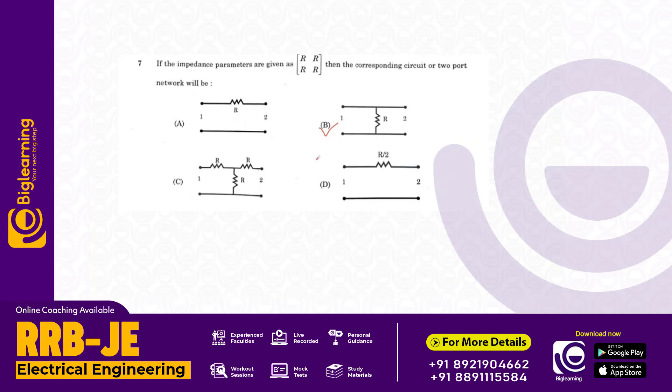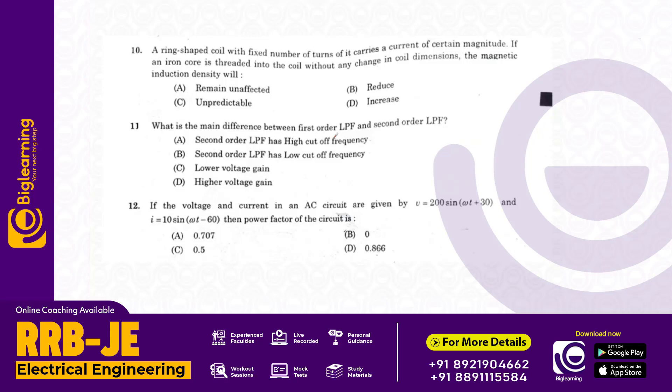A ring-shaped coil with a fixed number of turns carries a current of certain magnitude. If an iron core is threaded into the coil without any change in coil dimensions, the magnetic induction density will increase. The answer is D.